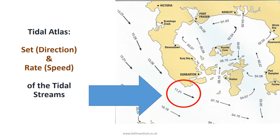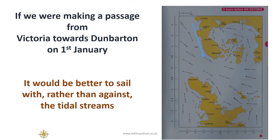The arrow gives us the set or direction of the tidal stream, and the numbers give us the rate of the tidal streams. In the example here, the neap rate is 1.1 knots and the spring rate is 2.1 knots.